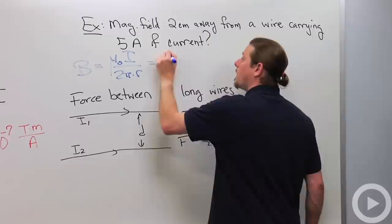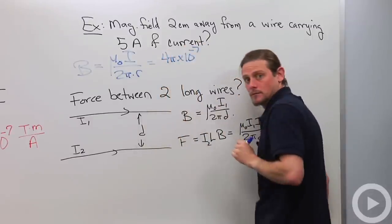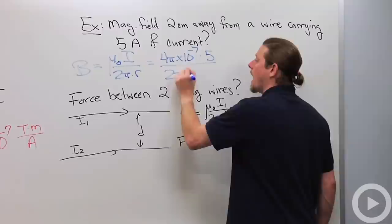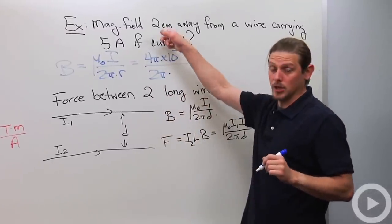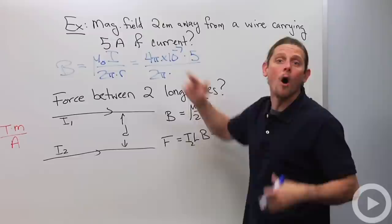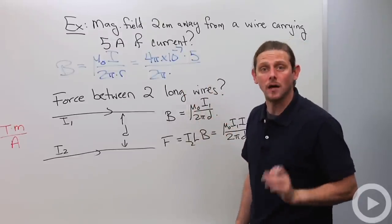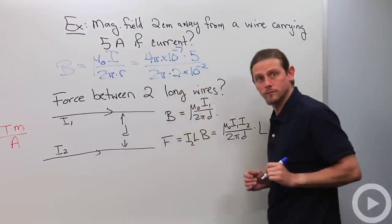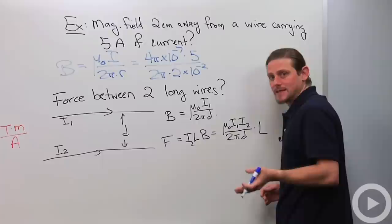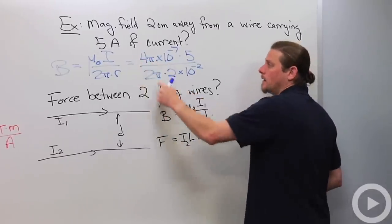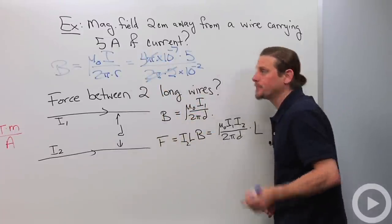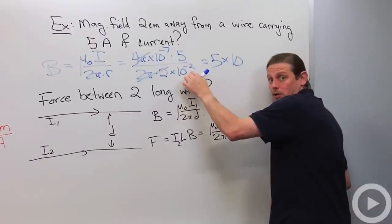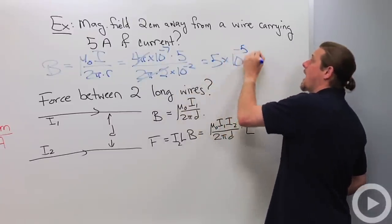So I'll just plug in 4π times 10 to the minus 7 times 5 amps divided by 2π times... Alright, what do we know we need to do? We need to change it to SI units or else our magnetic field will not come out in Tesla. So, 2 times 10 to the minus 2. Alright, now at this point, wonderful things happen. Look at this, 4π, 4π, bye-bye. Alright, so now we end up with 5 times 10 to the negative 5 Tesla.